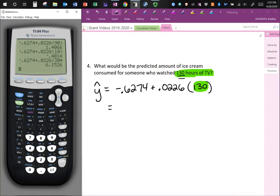And then I will use second enter to retype everything. And I will replace 300 with 130. And you get 2.3106. And we know that this is pounds of ice cream.